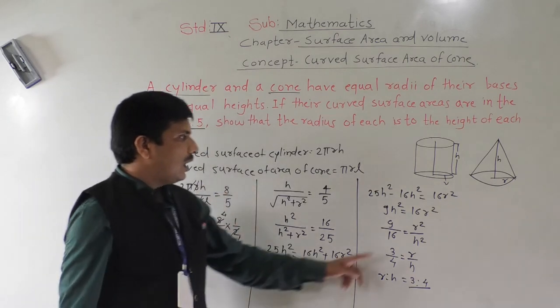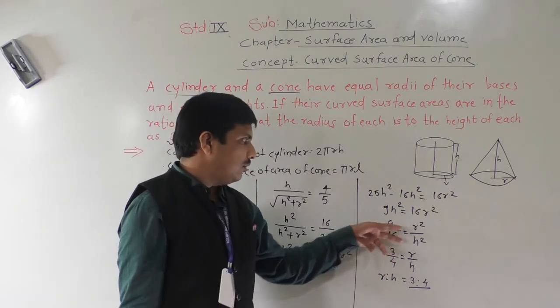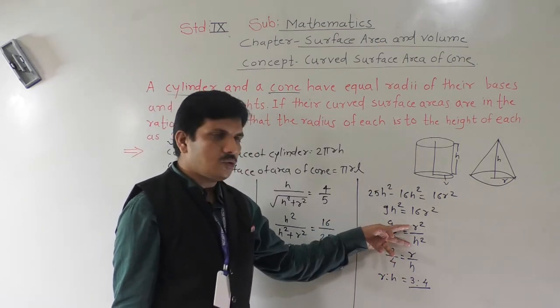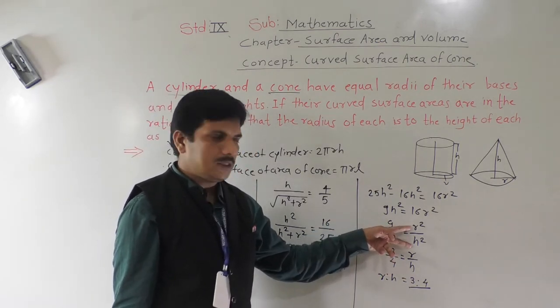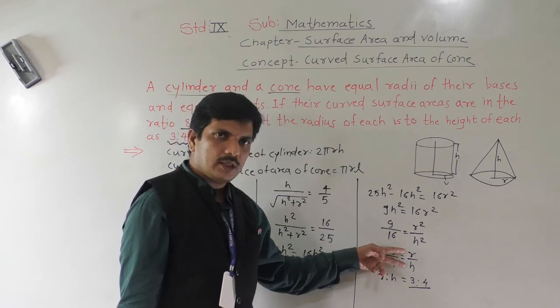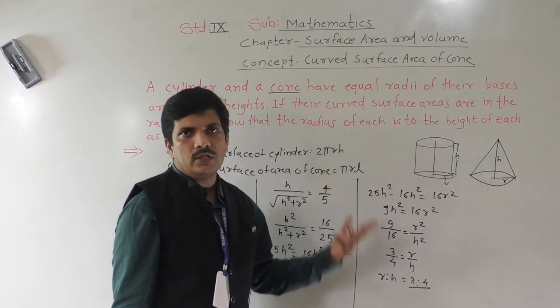So we have shown that radius is to height as 3 is to 4. We took 9 ÷ 16 = r² ÷ h². When we remove the square, that gives 3 ÷ 4 = r ÷ h.